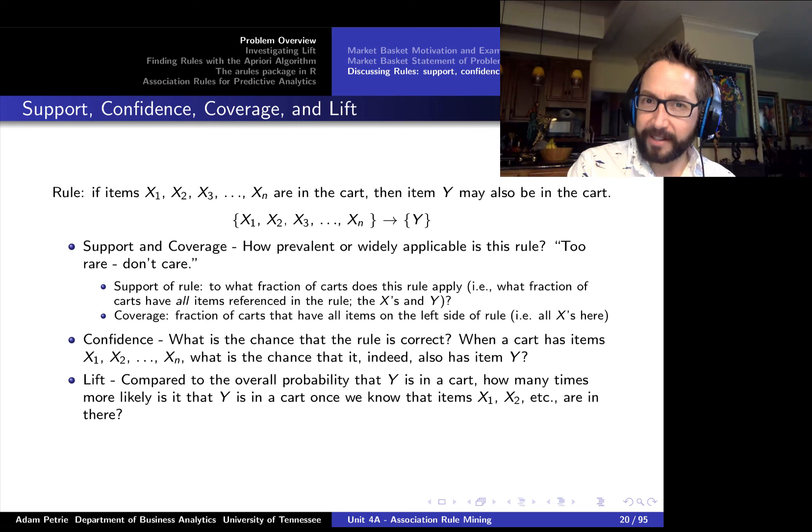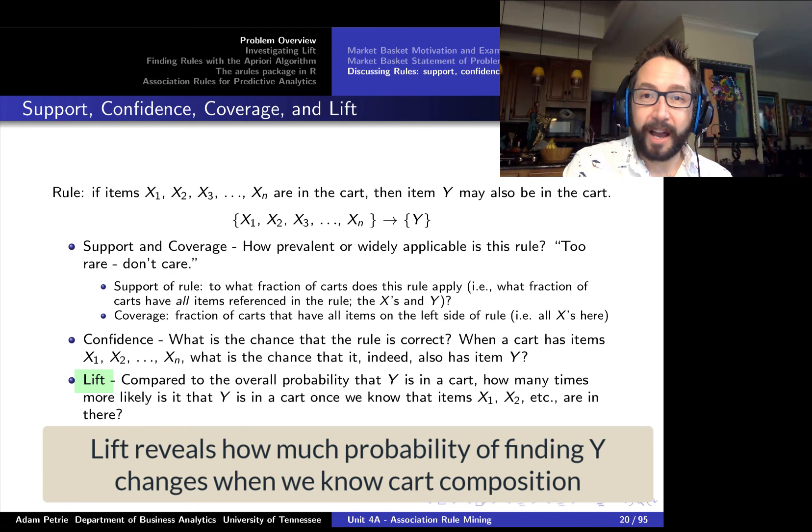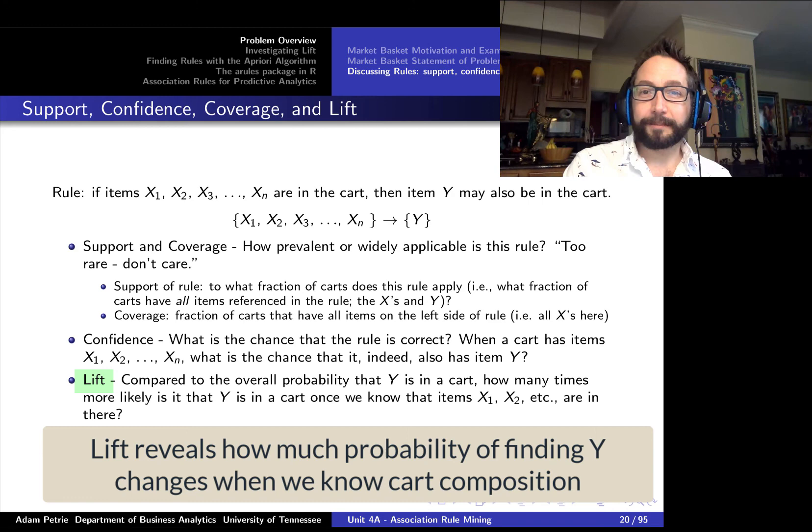And then finally, and we'll dive into a lot of detail with this word, the lift of a rule is talking about how much the probability of finding item y increases. So without any knowledge of what's in the cart, item y might be in 1% of them. But if we know that a particular combination of items are in there, like apples, bananas, and cauliflowers, well, the probability of finding pairs might skyrocket up by a factor of 10 to 10%. That up by a factor of is going to be called the lift of the rule. How many times more likely are we to find item y in the cart, given that we have that combination of items already in there that we find on the left-hand side, the x's.